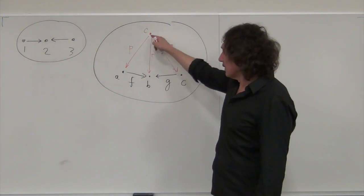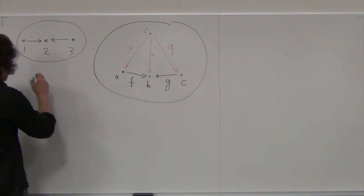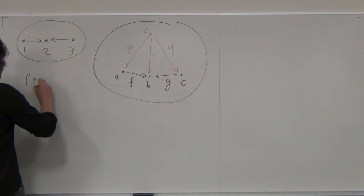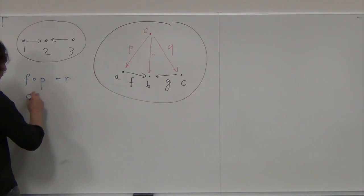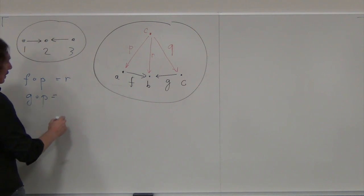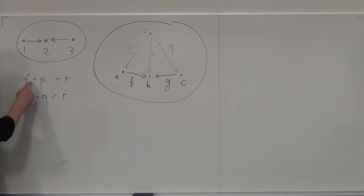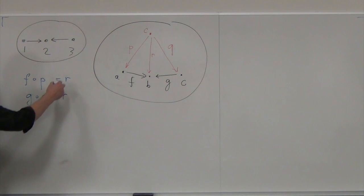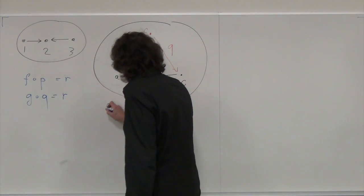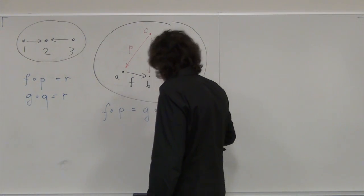The commutation conditions: these two triangles have to commute. So F after P must equal R, and G after Q must equal R. This is the difference between this and the equalizer — F is after P, but G is after Q, so these are two different ones. We can eliminate R and rewrite it as: F after P equals G after Q.